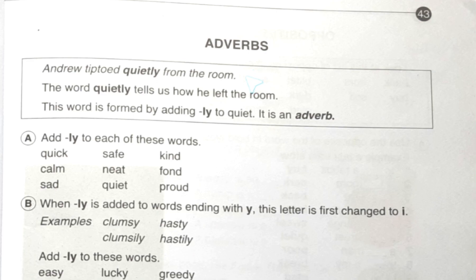Hello friends, I'm going to discuss Junior English Book 2, page number 43. Today's topic is adverbs. In this box it's written: 'Andrew tiptoed quietly from the room.' The word 'quietly' tells us how he left the room. The word is formed by adding 'ly' to 'quiet'. It is an adverb.